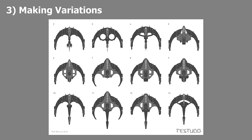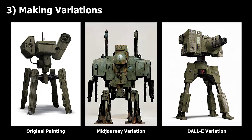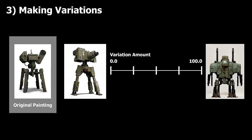Number three is making variations of my image. After coming up with an initial design, it's quite common to make variations to explore different details or shapes. Here's an example of many variations of a single spacecraft. Both Midjourney AI and DALL-E have methods for making variations of an existing image. DALL-E seems good at making similar variations, and Midjourney seems good at making very different variations, but what I'd love is a single piece of software that's good at both, with a simple sliding scale.